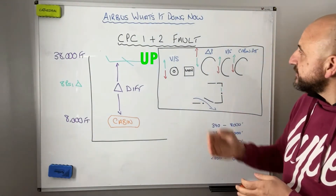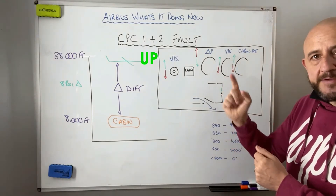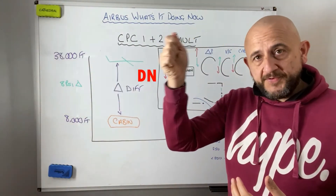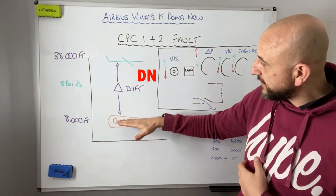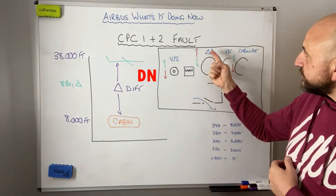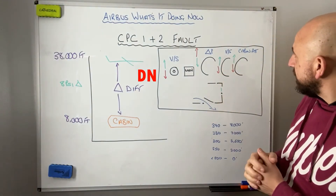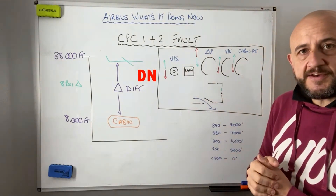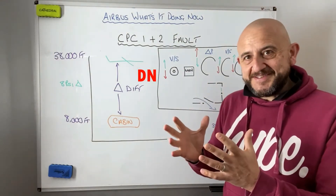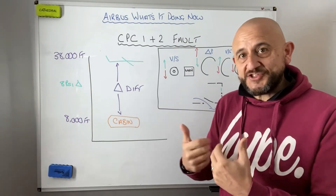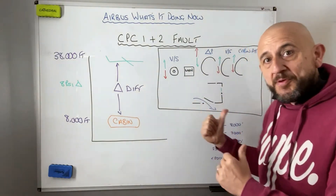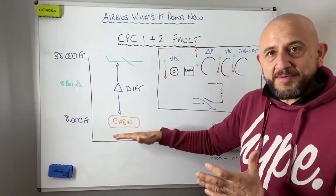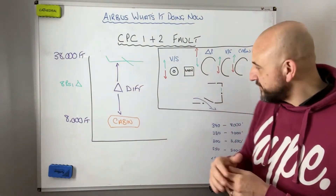To summarise: VS increase — differential reduces, vertical speed increases, cabin altitude increases, valve opens. Conversely, selecting VS down reduces the vertical speed, causing the cabin to descend. The differential increases, vertical speed reduces, cabin altitude reduces, and the valve closes slightly. So: open VS, the cabin climbs; reduce VS, the cabin descends and the differential increases.